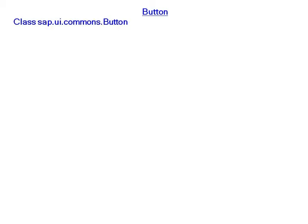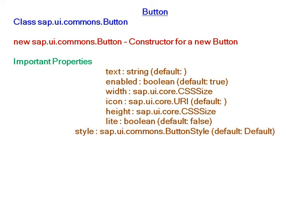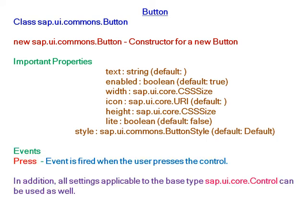The Button is of class sap.ui.commons.Button. For creating a new button, the constructor is new sap.ui.commons.Button. The important properties are text, enabled, and so on. The event is pressed — when the user presses the control, the event is triggered.